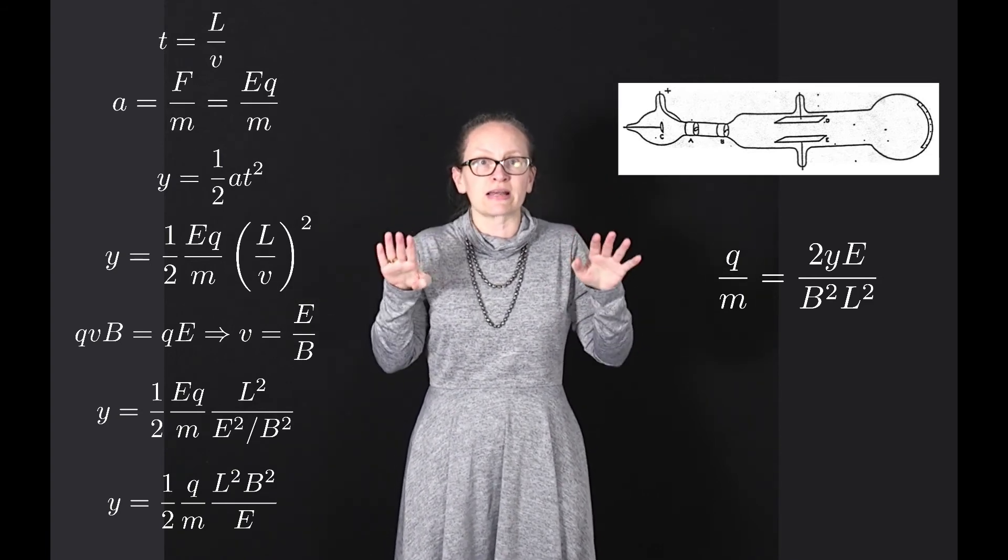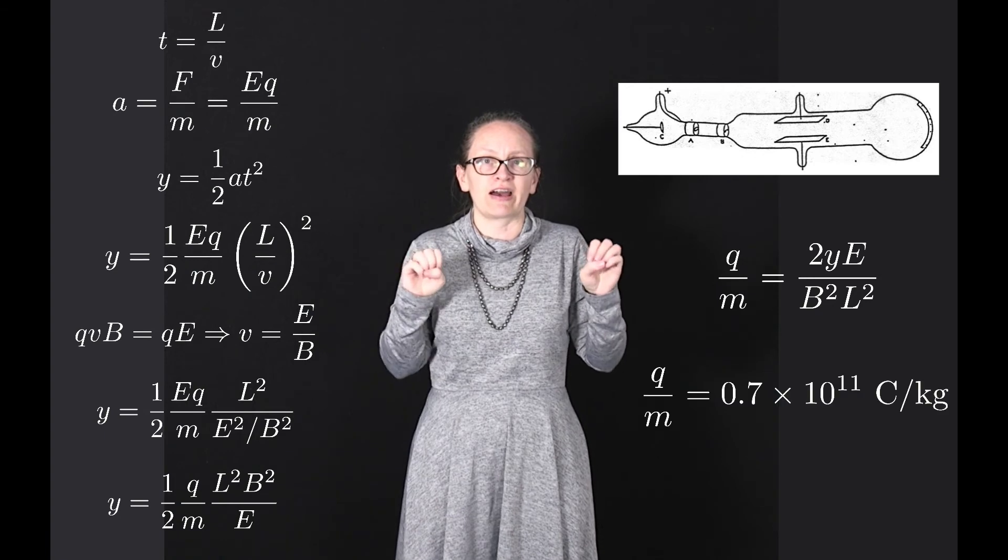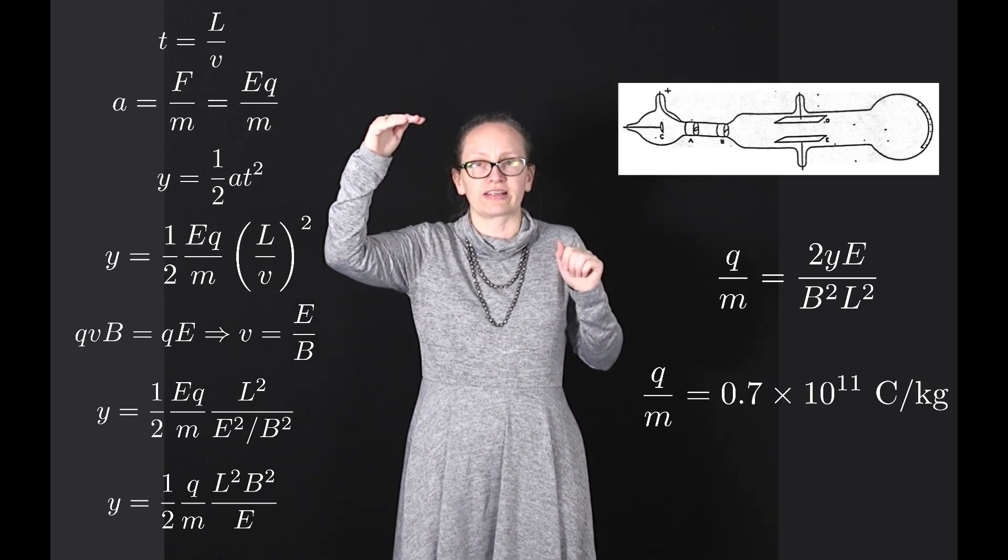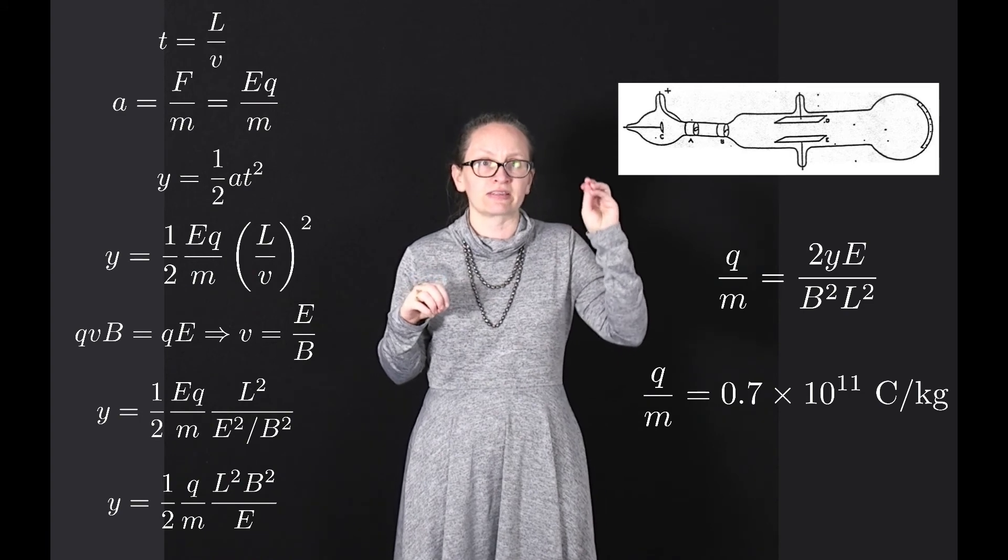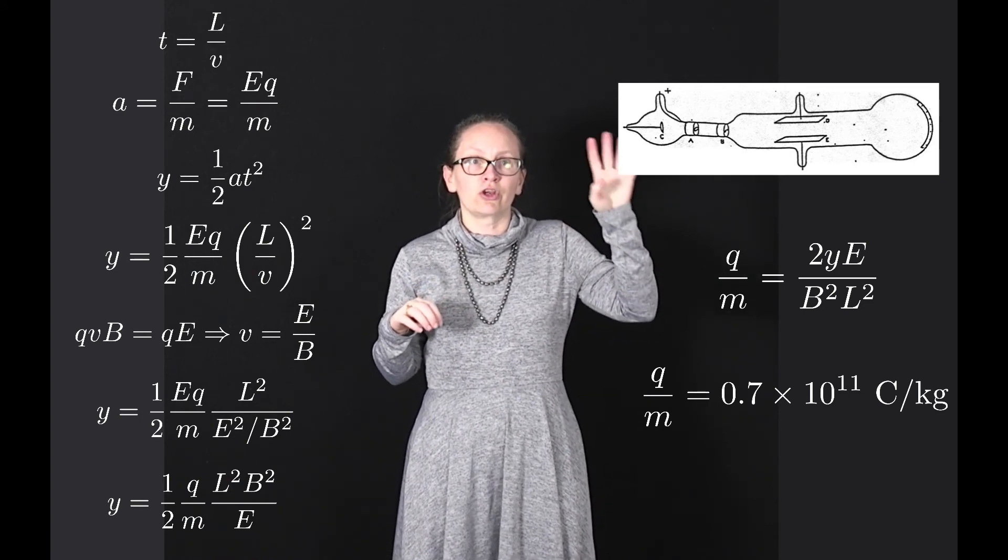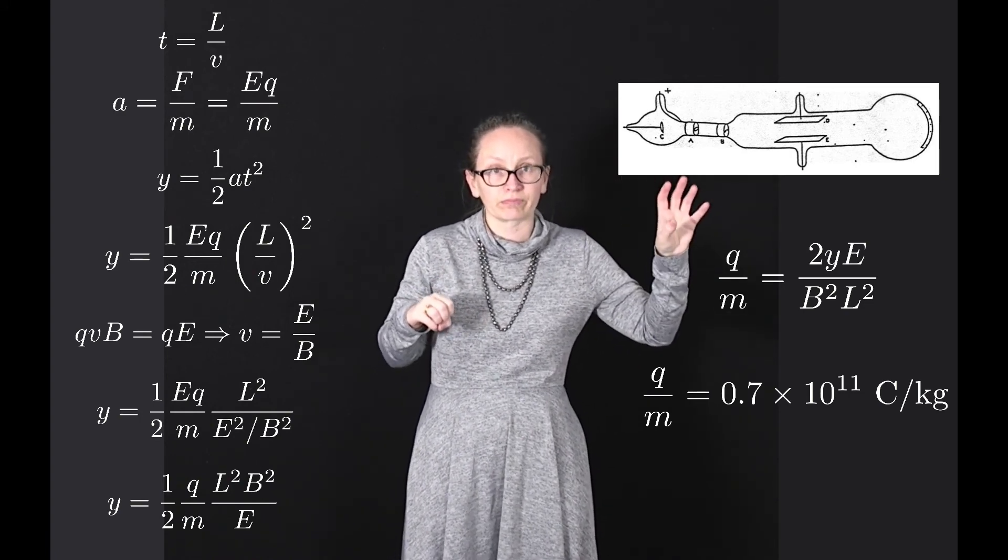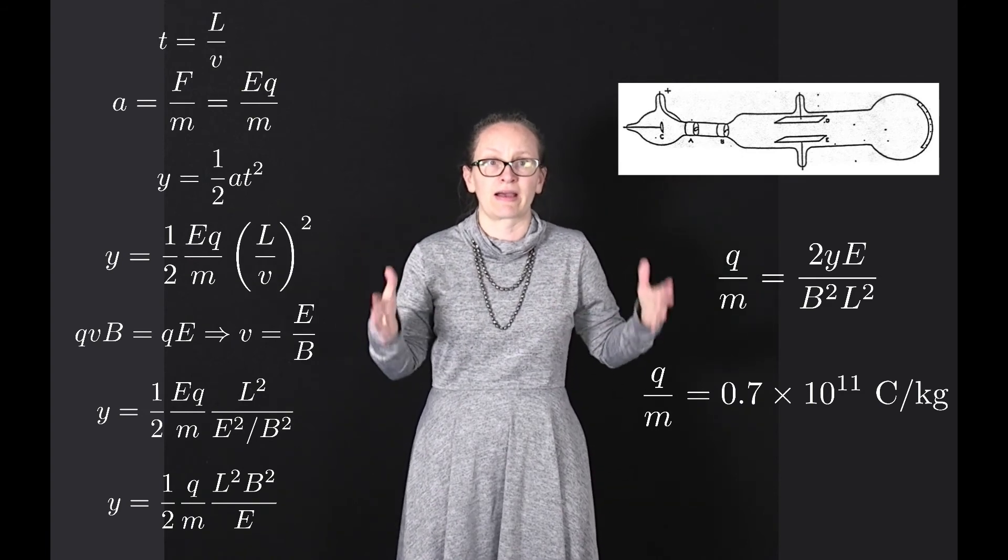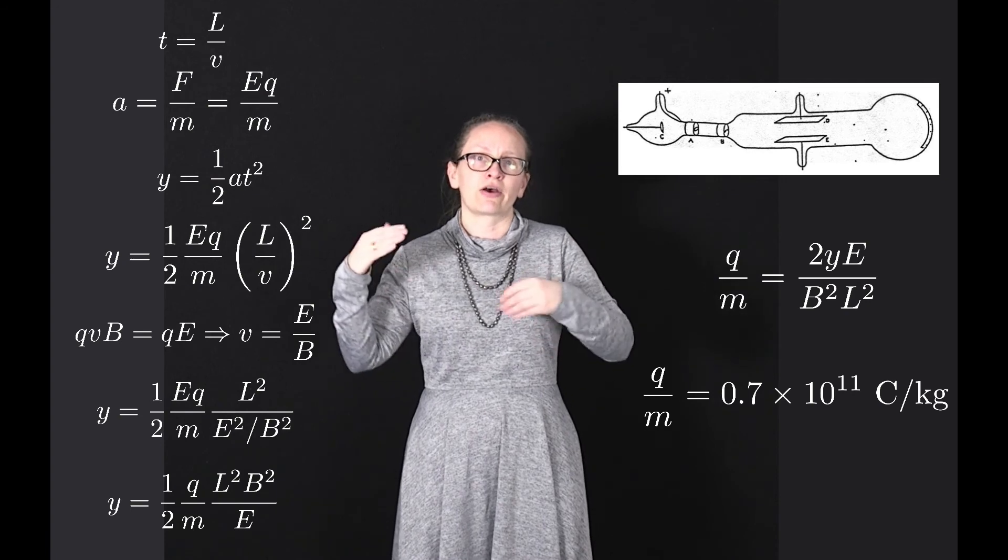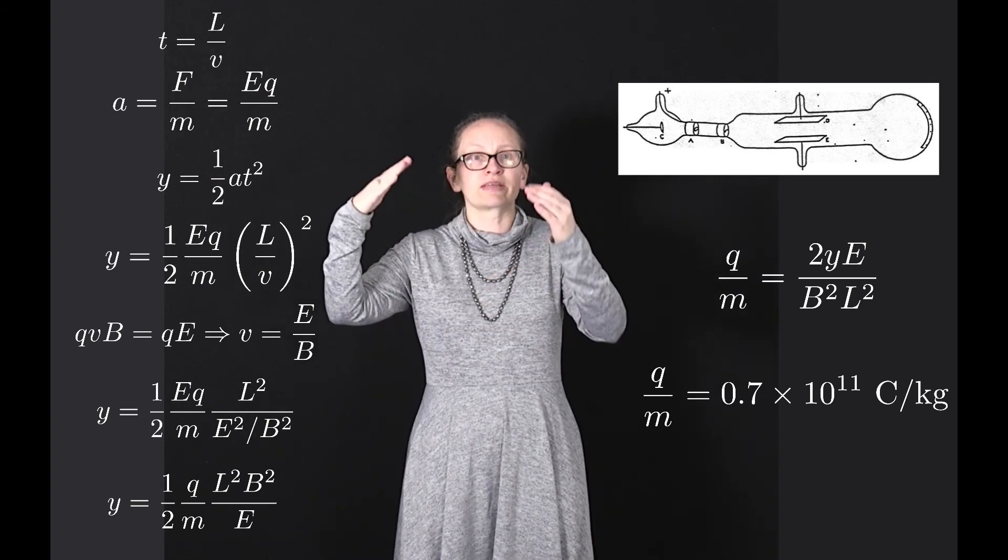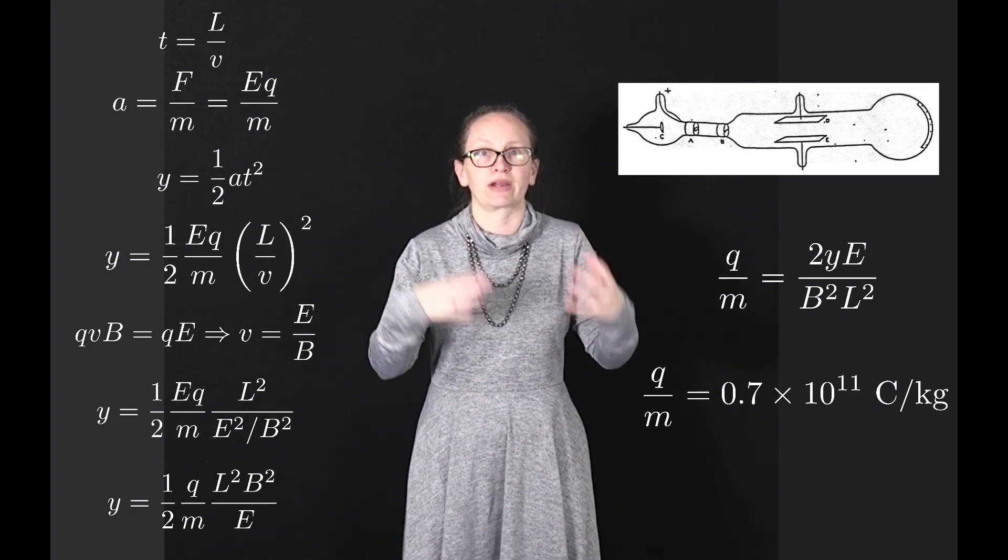When he substituted in his values, he found that the charge of an electron divided by the mass of the electron was given by 0.7 times 10 to the 11 coulombs per kilogram. This was over a thousand times bigger than the value before, telling him that the mass of the electron was much, much smaller than previously thought.